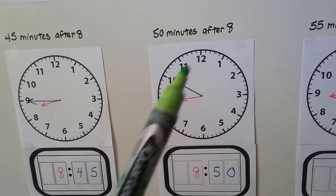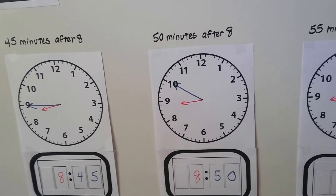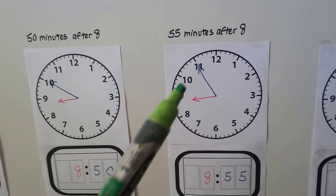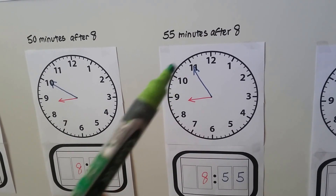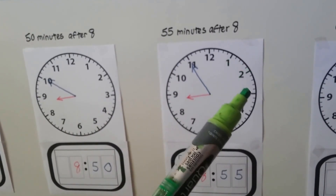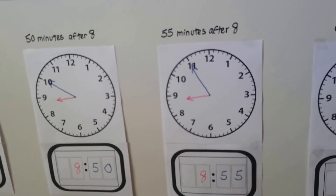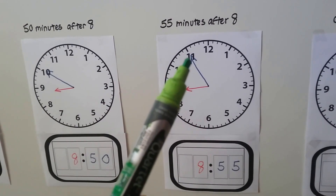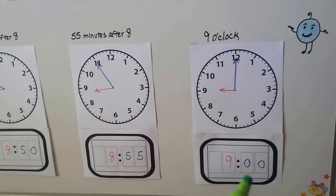Can you look at this and tell how many more minutes until it's nine o'clock? You could count those minutes — I'll talk about that in a future video. When the minute hand is pointing to the eleven, it's 55 minutes after eight. We added five minutes when it moved from the 10 to the 11 — skip count by fives: 5, 10, 15, 20, 25, 30, 35, 40, 45, 50, 55. It's 8:55. When five more minutes pass and the minute hand goes to the 12, it's nine o'clock — 9:00.